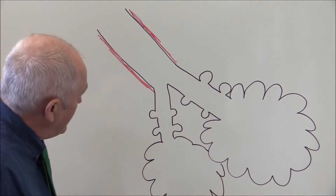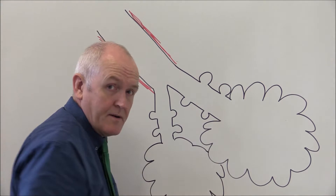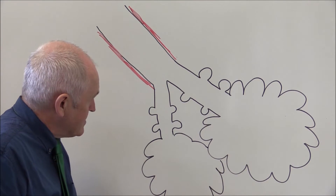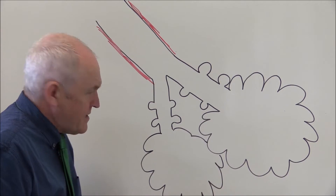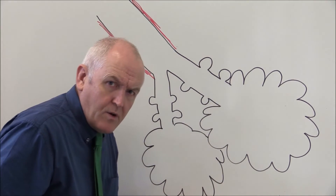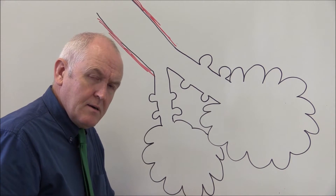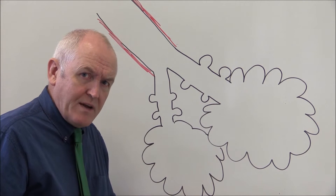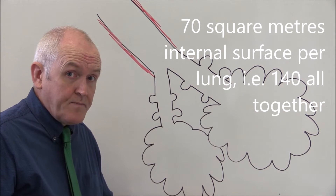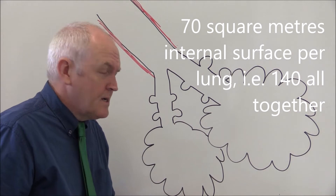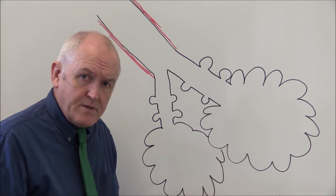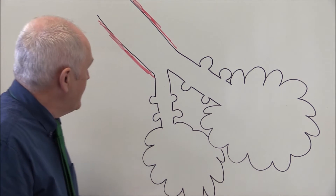All these alveoli are going to give a very large internal surface area over which gaseous exchange can take place. In fact, if you're young and healthy and you open up all of these alveoli, you will have 70 square meters of internal surface area in each lung — that's 140 square meters of internal surface area between your two healthy lungs.